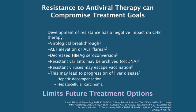Resistance to antiviral therapy compromises our treatment goals. Development of resistance has a negative impact on all of the goals of chronic hepatitis B therapy. We see virological breakthrough, ALT elevation, and sometimes even ALT flares. There is decreased hepatitis B antigen seroconversion. Resistant variants can be archived in the liver as cccDNA and never go away. Because of the unique genetic arrangement of the hepatitis B genome, polymerase changes alter the envelope, so resistant viruses if transmitted may escape vaccination. Finally, the emergence of resistance leads to progression of liver disease, hepatic decompensation, and increasingly, hepatocellular carcinoma. As well as compromising treatment goals, resistance also limits future treatment options.